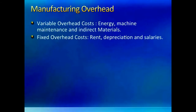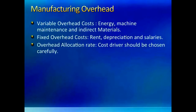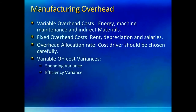Variable overhead costs are those that move with something — either number of units produced, number of machine hours, or labor hours. Examples are electricity bill, maintenance and repairs of machines. Fixed overheads are those that don't change with number of units produced and are typically costs for a period. Examples can be rent or leasing costs.